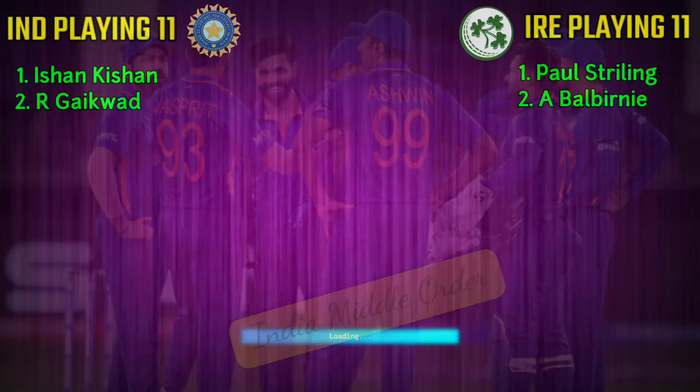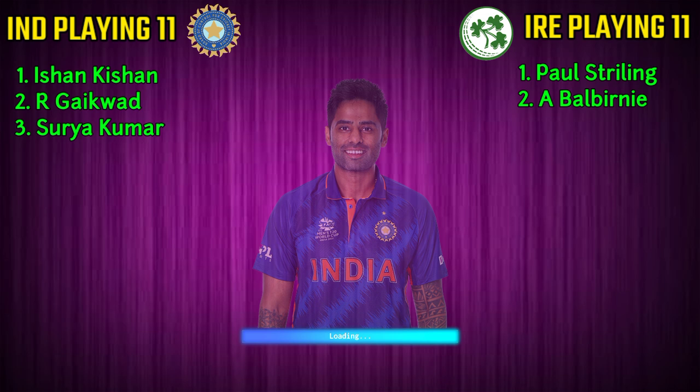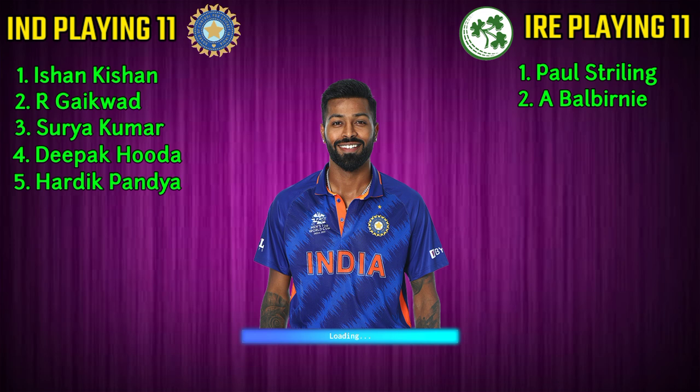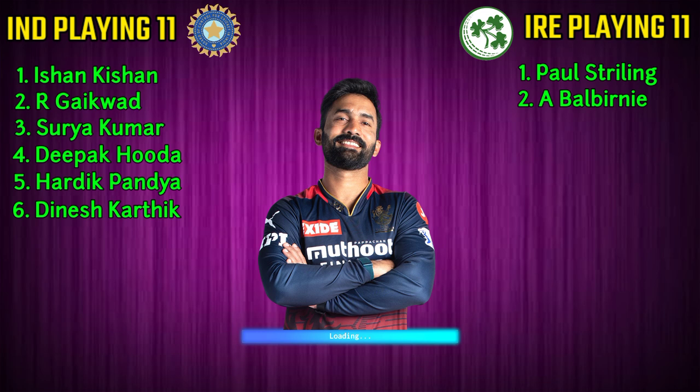India team middle order: Number 3, Suryakumar Yadav, right-handed batsman. Number 4, Deepak Hooda, all-rounder. Number 5, Hardik Pandya, captain and all-rounder. Number 6, Dinesh Karthik, wicketkeeper batsman. Number 7, Axar Patel, all-rounder.